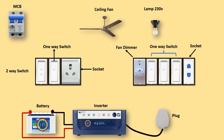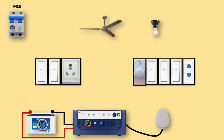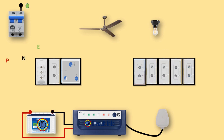Hence the inverter is a converter, not a generator. It can be used as a standalone device such as a solar power or backup power for home appliances. The inverter takes DC power from the batteries and converts it to AC power at the time of power failure.